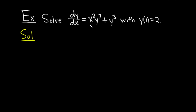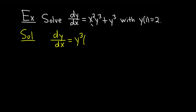We'll start by trying to manipulate our differential equation so that we can separate the variables. We have dy/dx equals — notice that we have a y cubed on the right-hand side. Let's factor that out: y cubed times parentheses, and what do you multiply by y cubed to get x squared y cubed? Just x squared. And what do you multiply by y cubed to get y cubed? Plus 1.